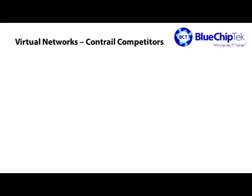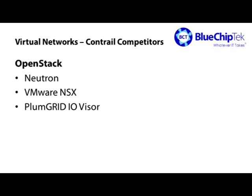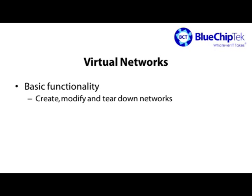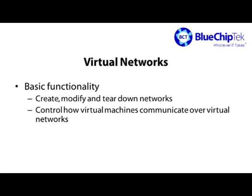It might help to pause and identify some of the most commonly used alternatives to Contrail, to give context for where it fits into data center architectures. In an OpenStack environment, Contrail plugs into Neutron. Alternatives include vanilla Neutron, VMware NSX, PlumGrid IOVisor, and Mitakura MetaNet. In a vSphere environment, alternatives include vanilla distributed virtual switches and, once again, NSX, IOVisor, and MetaNet. What all of these have in common is that they focus on controlling how virtual networks are created, modified, or torn down, and how virtual machines communicate across multiple hypervisor hosts.